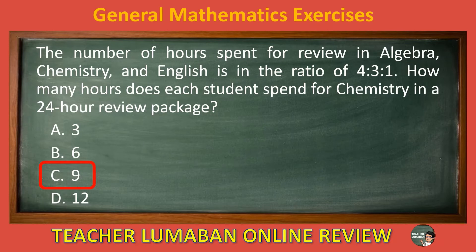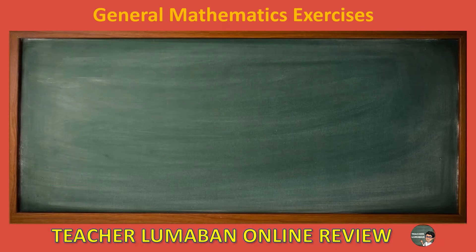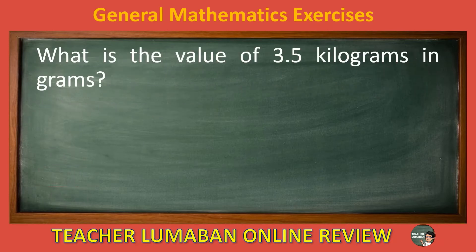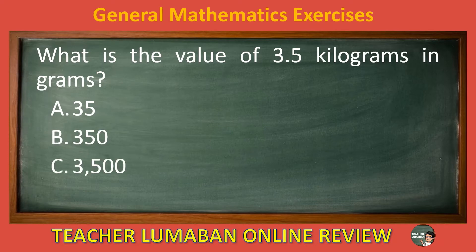What is the value of 3.5 kilograms in grams? Letter A: 35. Letter B: 350. Letter C: 3,500. Letter D: 35,000. Choose the suitable answer based on the given choices in 5 seconds.